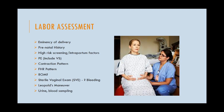Then we want to do a sterile vaginal exam if it's appropriate. Before we do a sterile vaginal exam, we have to know a couple of things. Is she bleeding profusely? If she is, we're not going to do a sterile vaginal exam — we talked about that in antepartum. And the second thing is, where is her placenta located? Is it in the correct place away from the cervical opening or does she have a placenta previa? If she has a previa, we're not going to do a sterile vaginal exam. So two reasons we would not do sterile vaginal exams: profuse bleeding or placenta previa.